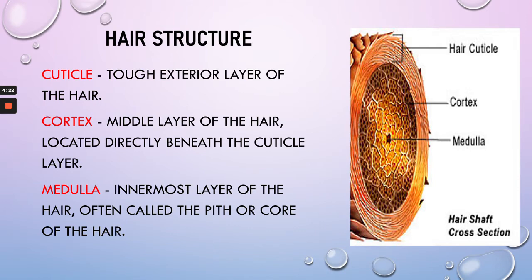Let's take a look at hair structure, starting with the cuticle, which is the tough exterior layer of the hair. The cuticle protects the cortex and the medulla. The cortex is the middle layer of the hair located directly beneath the cuticle layer — everything happens in the cortex, also referred to as the cortical layer. The medulla is the innermost layer of a hair, often called the pith or the core. Fine hair does not have a medulla, which is why the granules are very tight, close together, and are round.